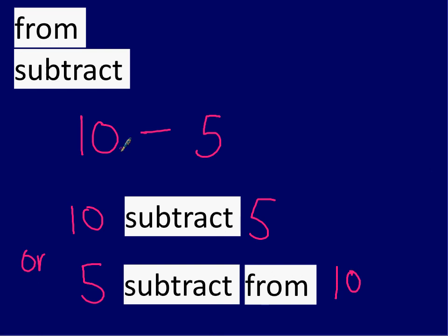The rule is that if you're trying to read from left to right, 10 take away 5, then you say take away or subtract. But if you're trying to talk about the second number first, if you want to sort of talk about it in this direction, you would need to say take away from or subtract from.